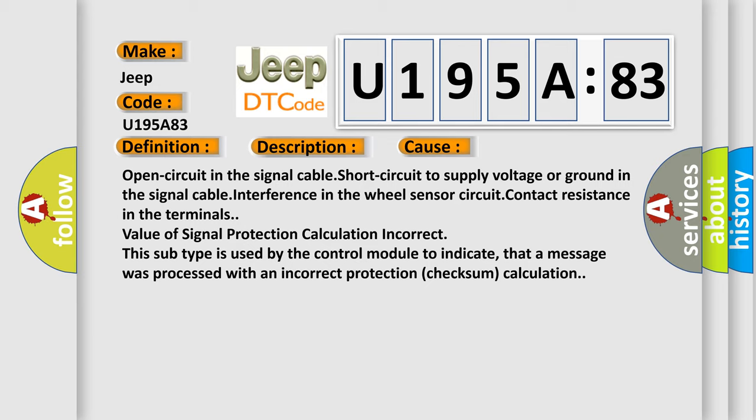Value of signal protection calculation incorrect. This subtype is used by the control module to indicate that a message was processed with an incorrect protection checksum calculation.